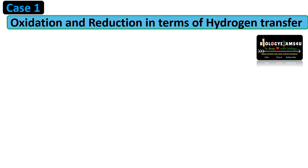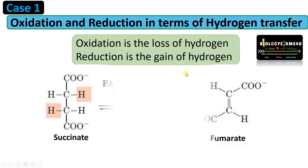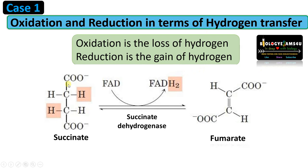Case 1: oxidation and reduction in terms of hydrogen transfer. Oxidation is simply the loss of hydrogen, whereas reduction is the gain of hydrogen. This is step six of the citric acid cycle, where succinate is oxidized to form fumarate.